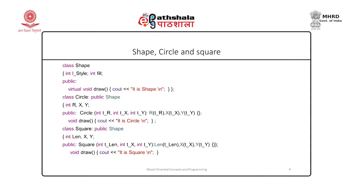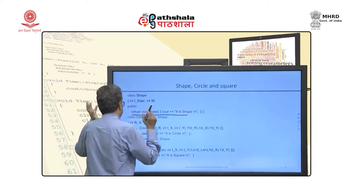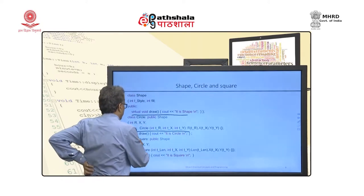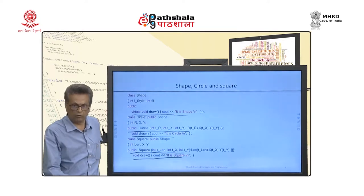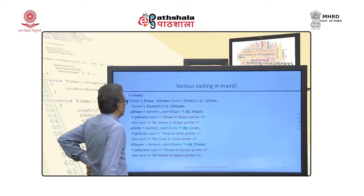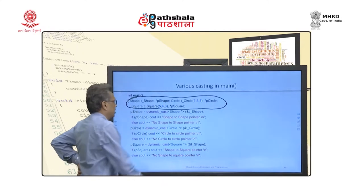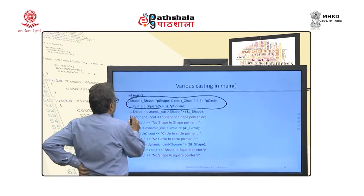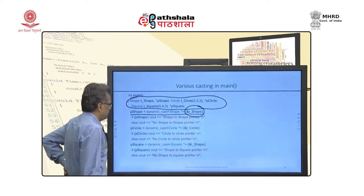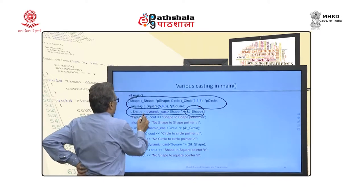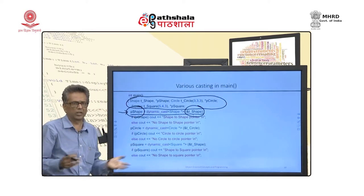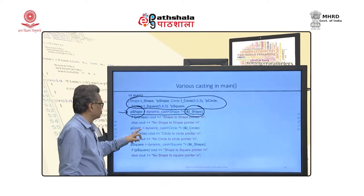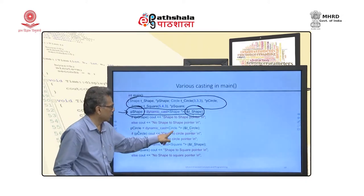Here is the class hierarchy we are used to: a shape class with a virtual draw function, then a circle class with its constructor and virtual draw, and a square class with its constructor and virtual draw. Some objects of different classes and pointers to them are defined. Casting shape to shape is allowed, circle to circle is allowed. Shape to square may not be allowed — if not allowed, the result is a null pointer.